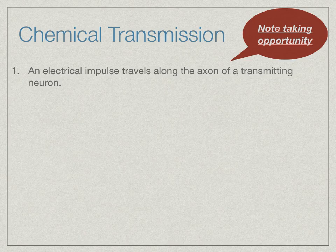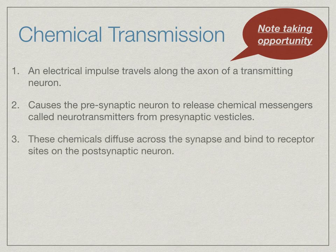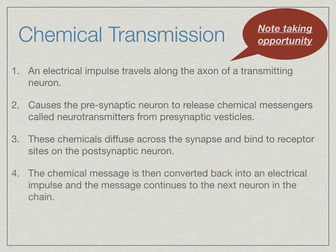To clarify: an electrical impulse travels along the axon of a neuron. When it reaches the presynaptic neuron, chemical messengers called neurotransmitters are released from presynaptic vesicles into the synapse. These chemicals diffuse across the synapse and bind to receptor sites on the postsynaptic neuron — essentially the dendrite of the neighbouring neuron. That chemical message is then converted back into an electrical impulse, and the message continues to the next neuron in the chain.